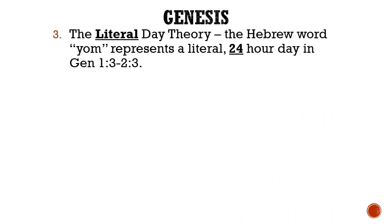The third and final theory is known as the literal day theory. This theory believes that the Hebrew word yom represents a literal 24-hour day in Genesis 1 verse 3 all the way through Genesis 2 verse 3.